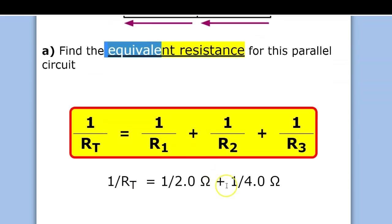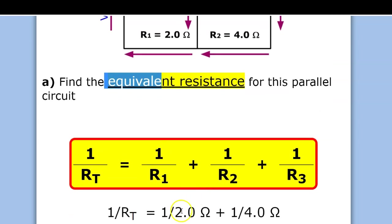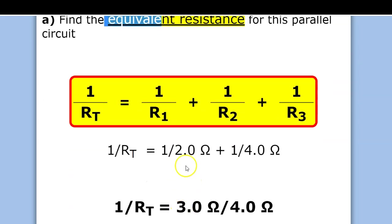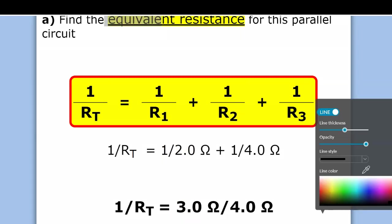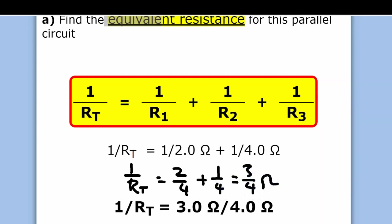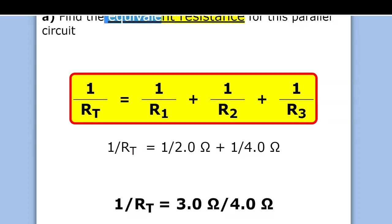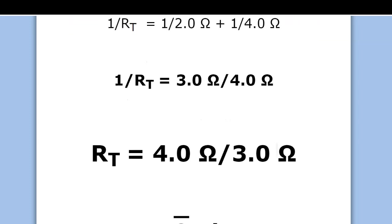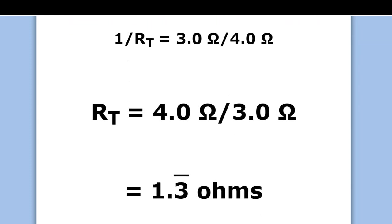It would be 1 over 2 plus 1 over 4. The common denominator is 4, so 1 over RT equals 2 over 4 plus 1 over 4, which equals 3 over 4. The final step is to flip it: 3 over 4 becomes 4 over 3, which is 1.3 ohms.